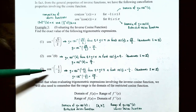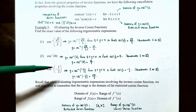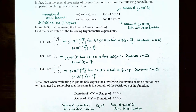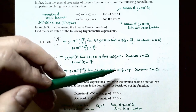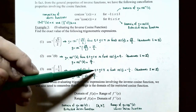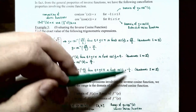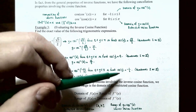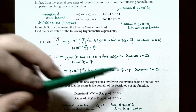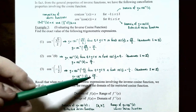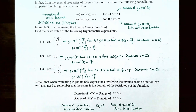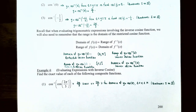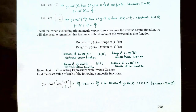Number three: cos⁻¹(−1/2). Let y = cos⁻¹(−1/2); y must be in [0, π]. Since cos(y) is negative, we must be in quadrant 2. The value where cosine equals −1/2 in [0, π] is y = 2π/3, which is in quadrant 2. So cos⁻¹(−1/2) = 2π/3. Recall that the range of y = cos⁻¹(x) is [0, π] — the domain of the restricted cosine function — and the domain is [−1, 1].